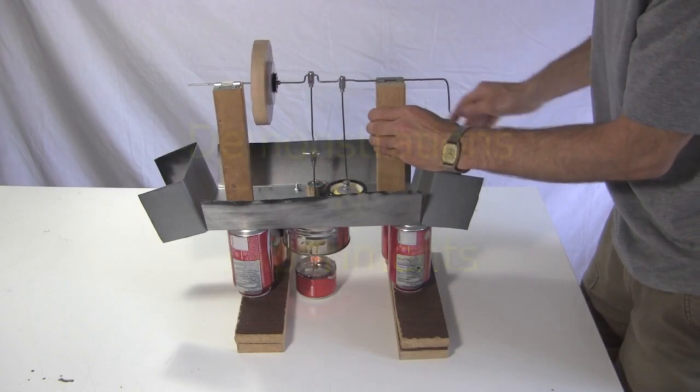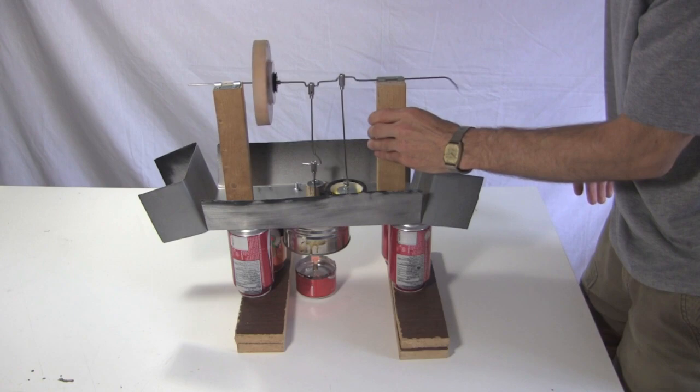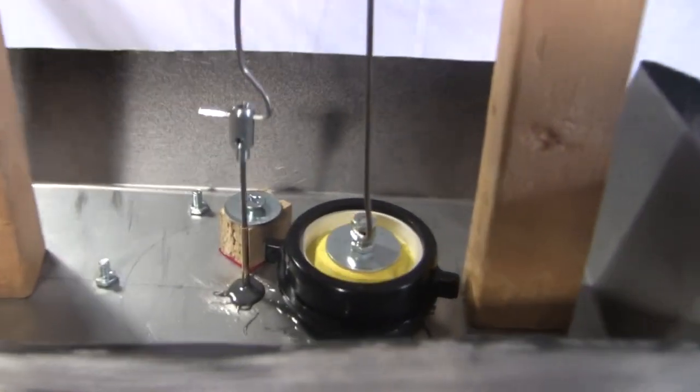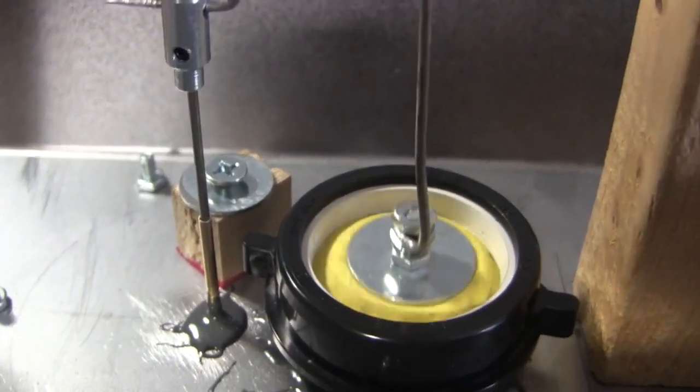It took a little while to get heated up and running the first time. When it did, it wasn't very fast. Notice when I go in close that you can see smoke coming out of this support tube. Probably a coating inside melting off.